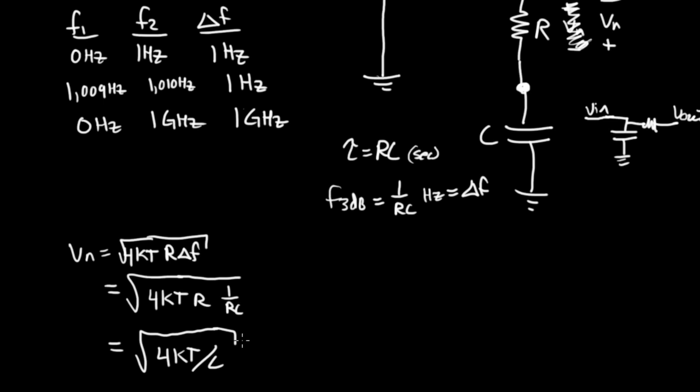That is an interesting expression because our noise voltage was caused by the resistor, the thermal noise on the resistor. But, in the final expression for noise voltage, here, we have the resistor showing up not at all. It's dominated, in fact, by the capacitor. And why is that? That's because the capacitor is what's setting the bandwidth of the system. I think this is a very interesting result.